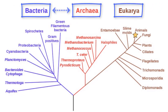Both the bacteria and archaea domains consist of organisms made of prokaryotic cells that do not have a true nucleus. There are structural and biochemical differences that separate these two domains despite their similarities. The third domain is eukarya, and this domain consists of all eukaryotic cells that are larger, much more complex, and have a true nucleus, which includes any type of plant, animal, or fungus.